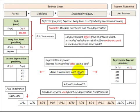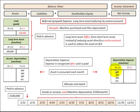As the asset is consumed each month, accumulated depreciation goes into depreciation expense. Since we have a credit-plus in accumulated depreciation of five hundred dollars per month, we use the debit-plus amount in depreciation expense to record that same five hundred dollars.